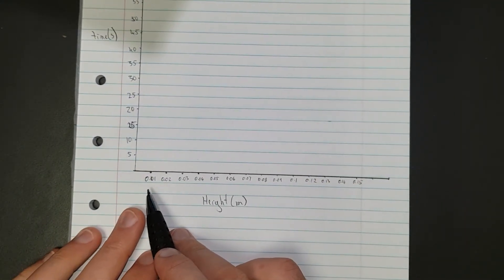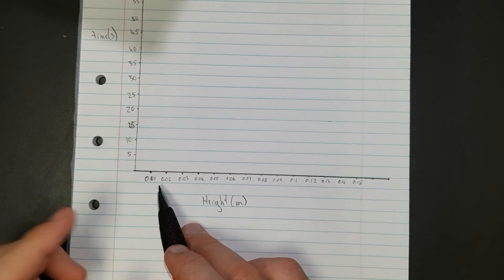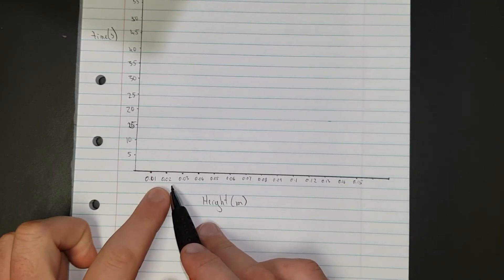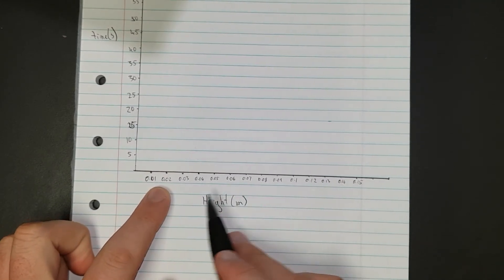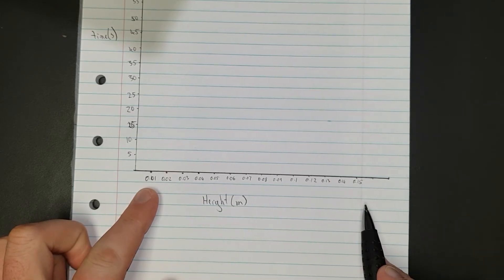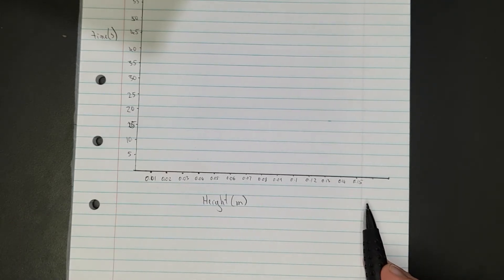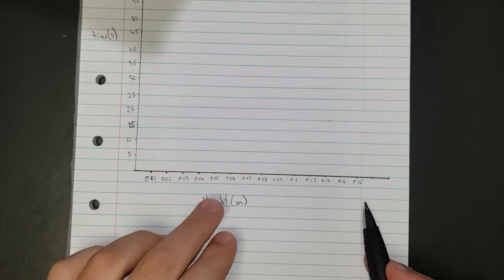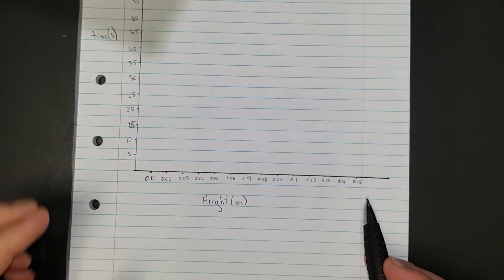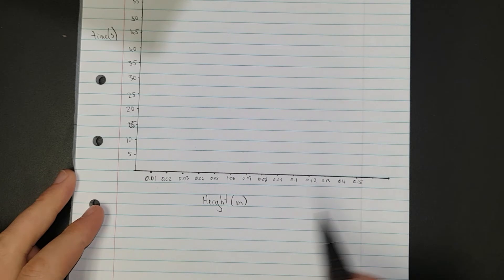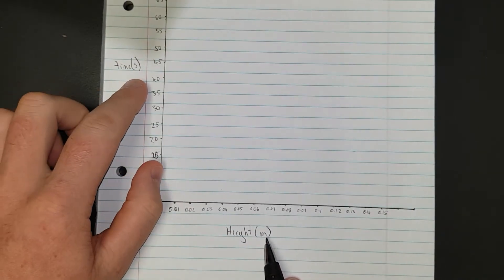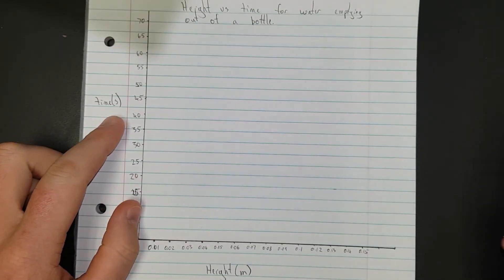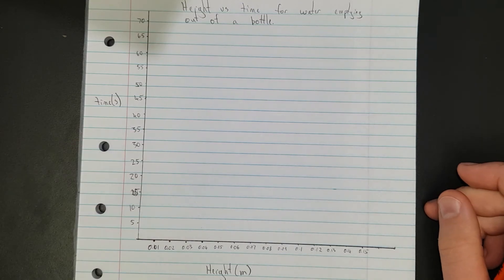Instead of writing 1 times 10 to the negative 3 and 2 times 10 to the negative 3, I've written it in full form because we'll use that technique for the next graph. Notice units - units are important. I'm going to pause the video and plot all my points.